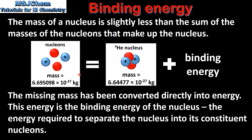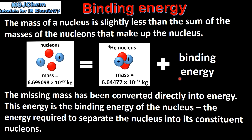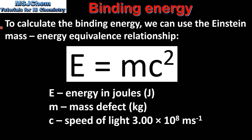So the mass of the nucleons that make up a nucleus equals the mass of the nucleus plus the mass that's been converted to the binding energy. To calculate the binding energy we can use the Einstein mass-energy equivalence relationship, which is E equals MC squared. E is the energy in joules, M is the mass defect in kilograms, and C is the speed of light.